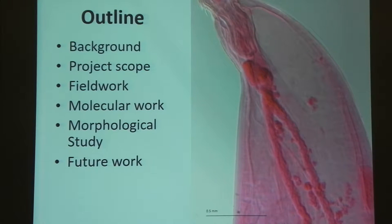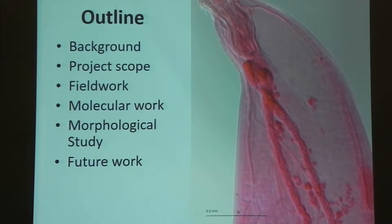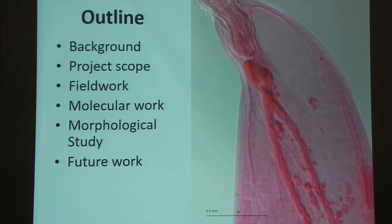So to give you an outline: I'll be covering background information on my worms, my project scope, the field work I've done so far, molecular work I've completed, the morphological study I'm doing currently, and then future work. This is a picture of a slide of Acanthocephalins that I made from a worm that we collected.